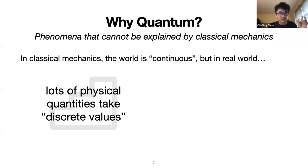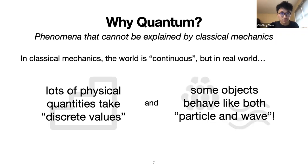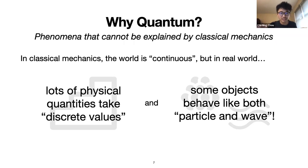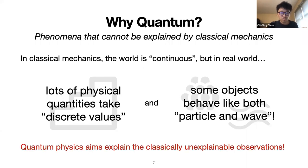For example, there are some physical quantities that take discrete values, which we'll see in a minute. Also, there are some objects that behave both like a particle and a wave at roughly the same time, and this is not really allowed in classical mechanics. Classical mechanics treats things as particles, while electromagnetic theory is about waves — the two don't allow the same thing to be both particle and wave simultaneously. Quantum physics is a theory trying to explain these phenomena.